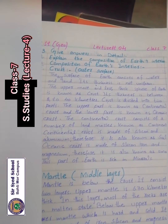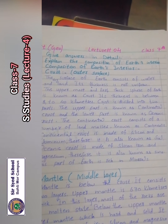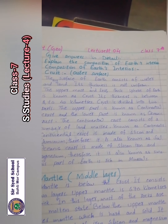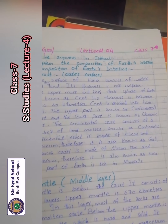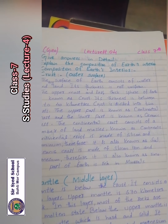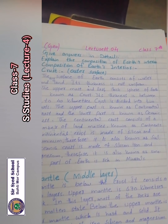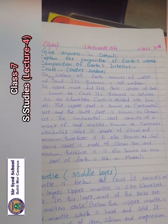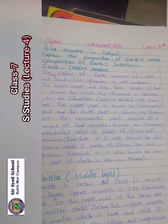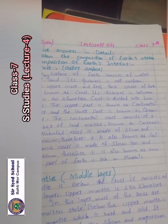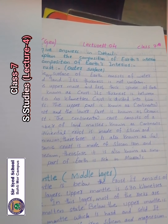Crust is divided into two parts: the upper part is known as continental crust and the lower part is known as oceanic crust. The continental crust consists of a number of land masses known as continents. Continental crust is made of silicon and aluminium, therefore it is also known as SIAL. Oceanic crust is made of silicon, iron and magnesium, therefore it is known as SIMA. This part of earth is rich in minerals.